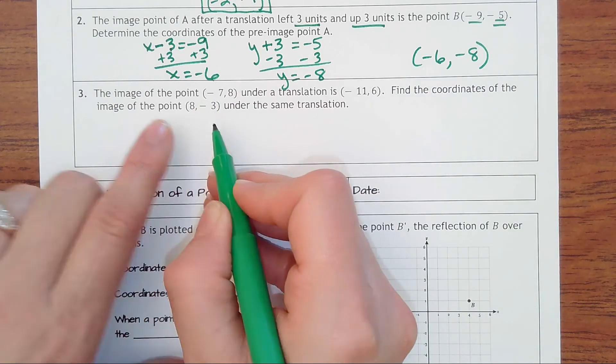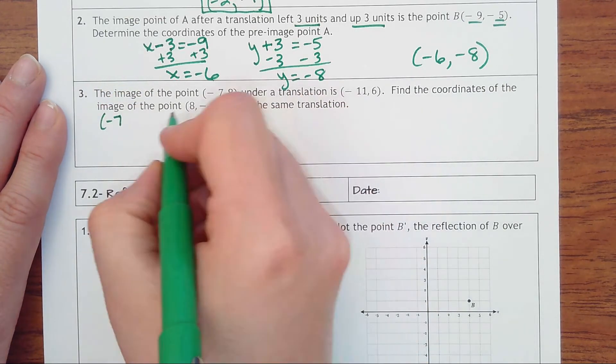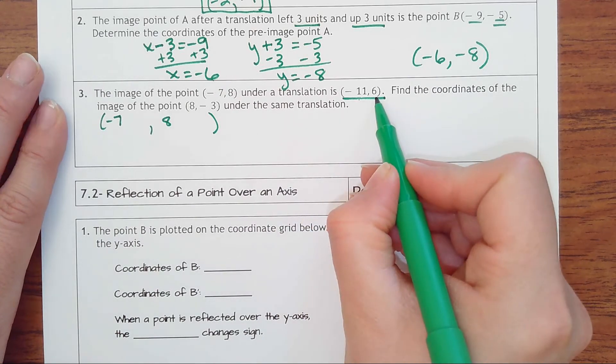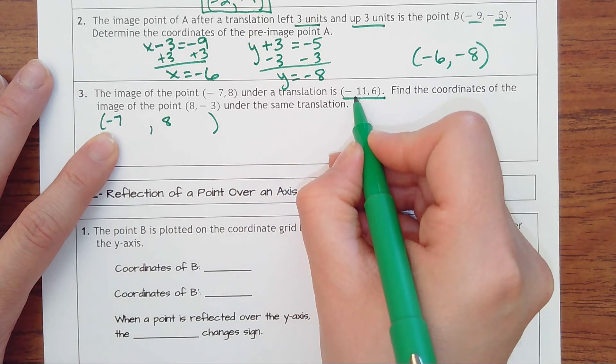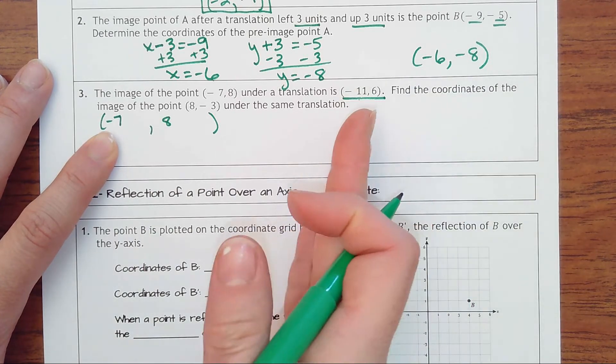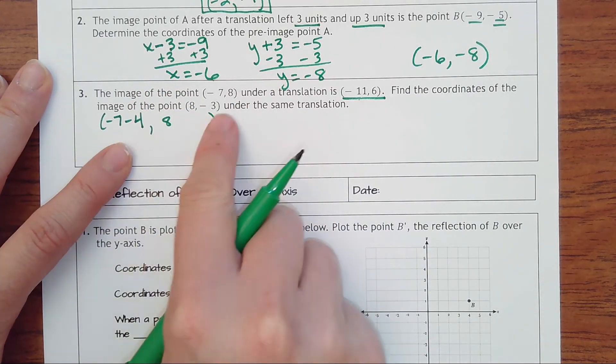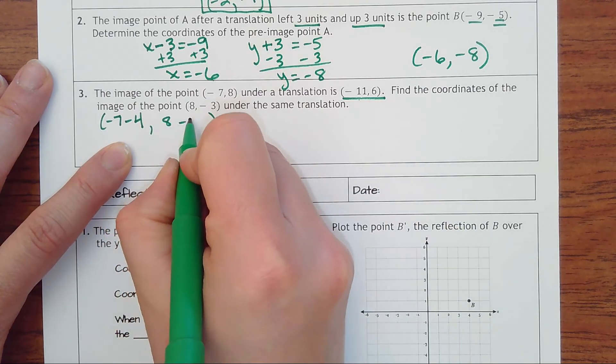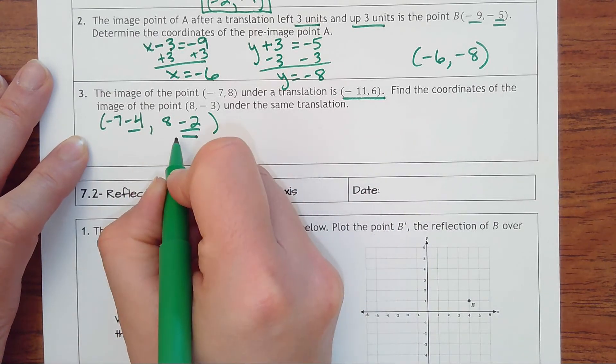So let's think about (-7, 8). How did it become (-11, 6)? -7 plus or minus what number would result in -11? We'd have to go more negative, so -7 going to -11 went to the left four. And then 8 to get to 6 had to be minus 2, or down two. So these are our rules.